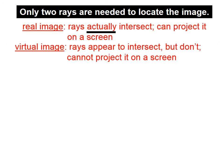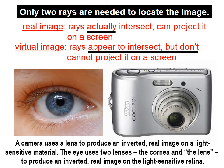Let's define what we mean by a real and a virtual image. In a real image, the rays actually intersect — real images, the rays really intersect — and you can project a real image onto a screen. In a virtual image, the rays appear to intersect but don't, so we can't project it on a screen.